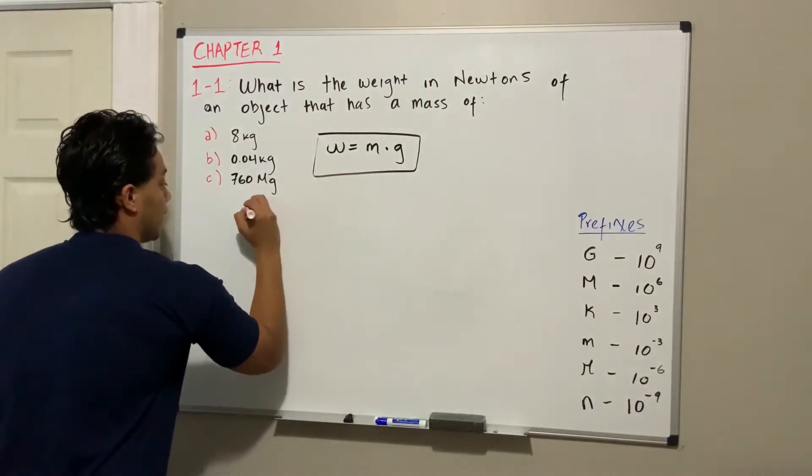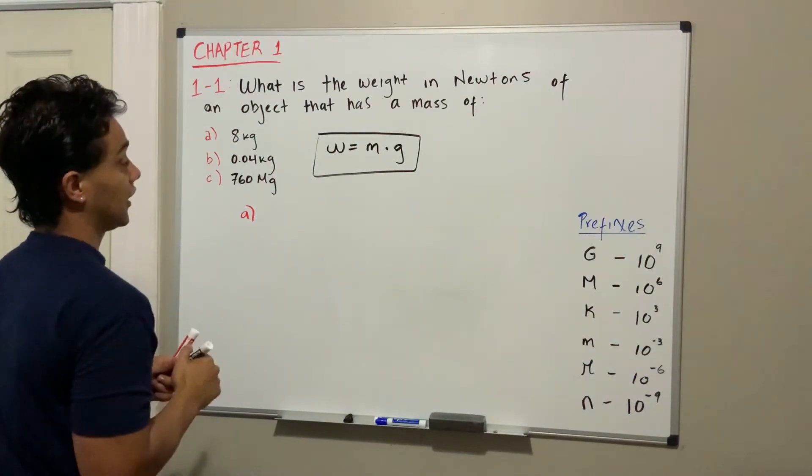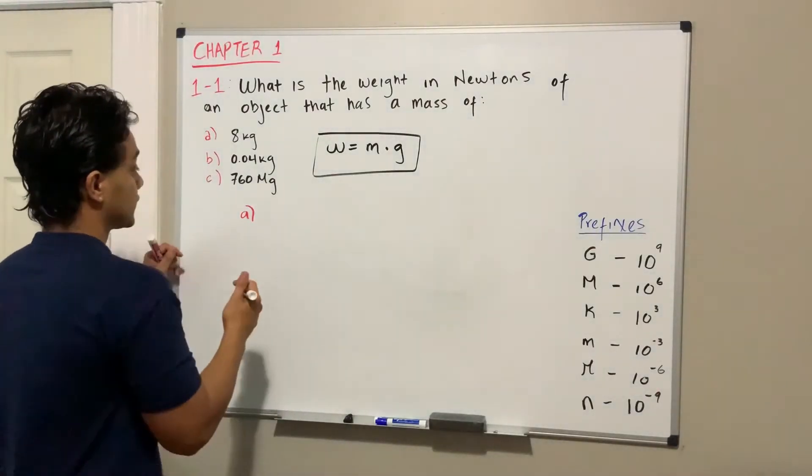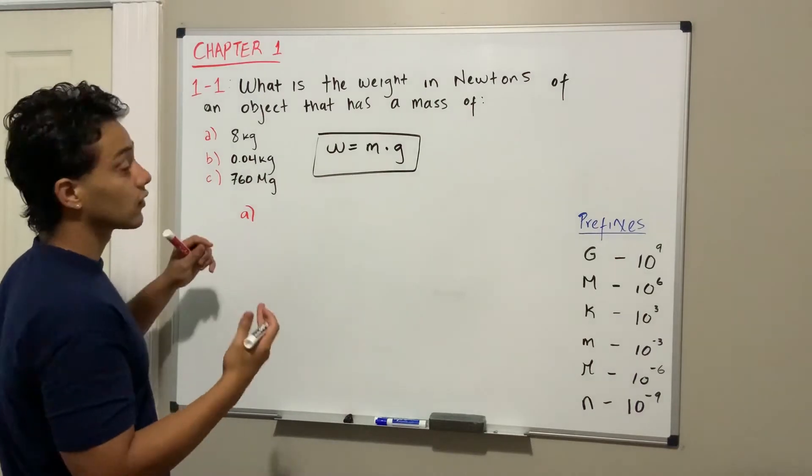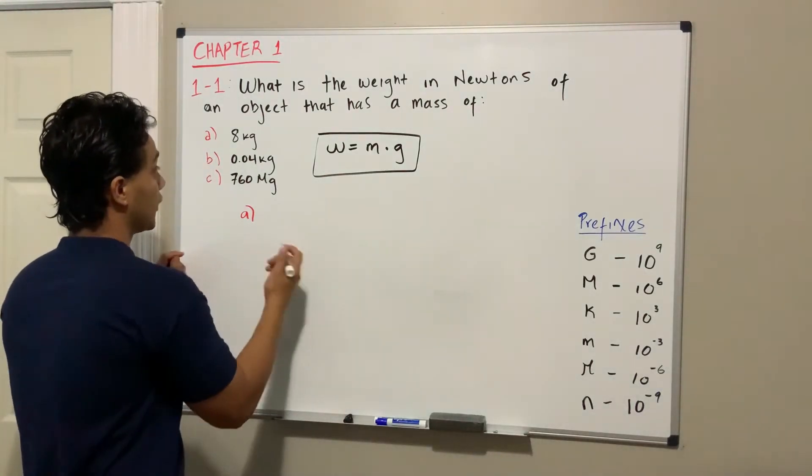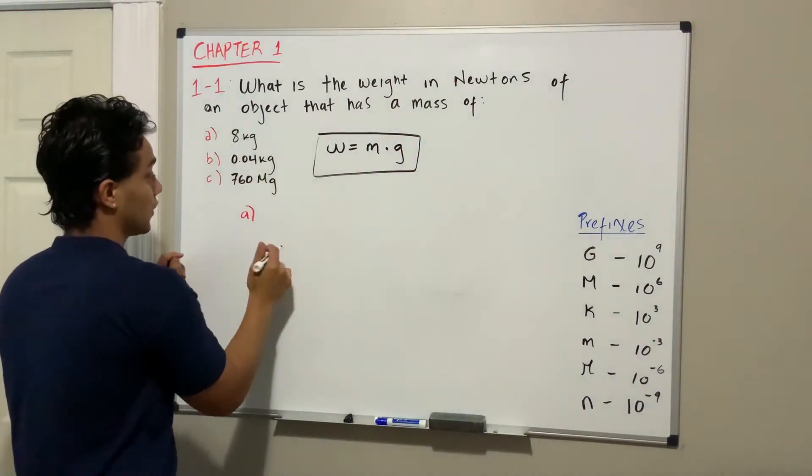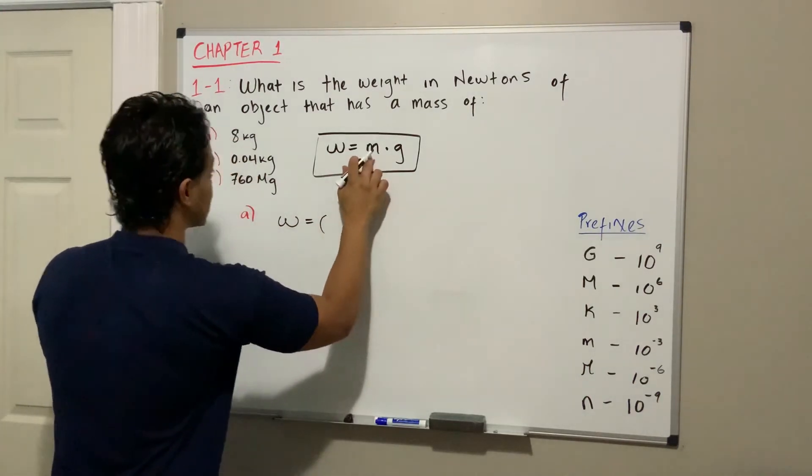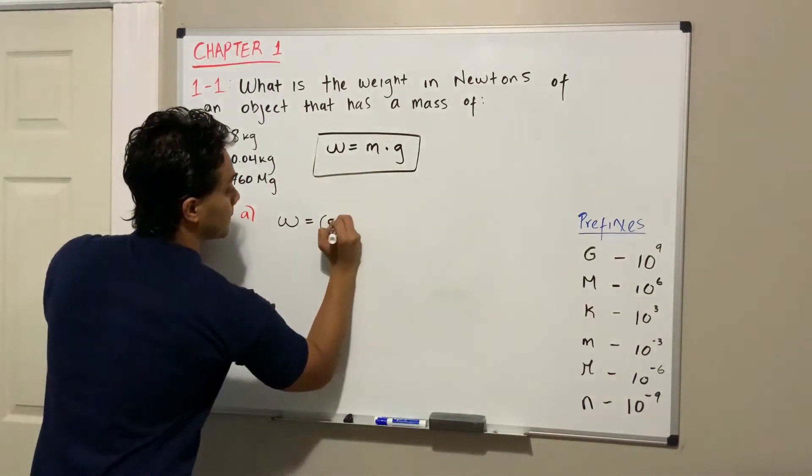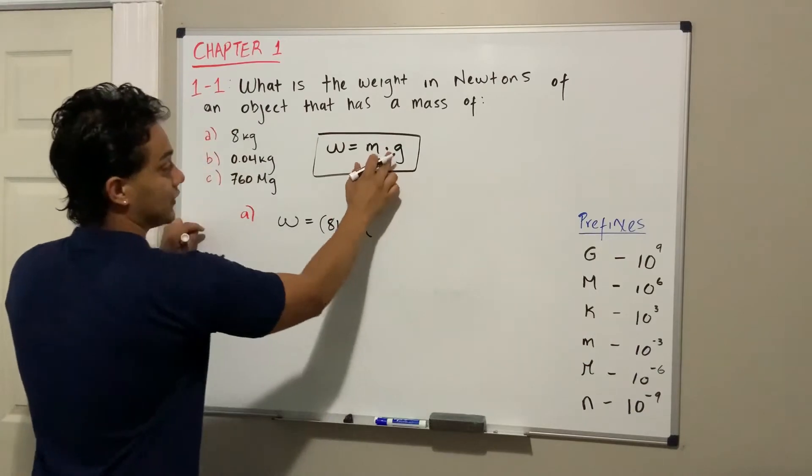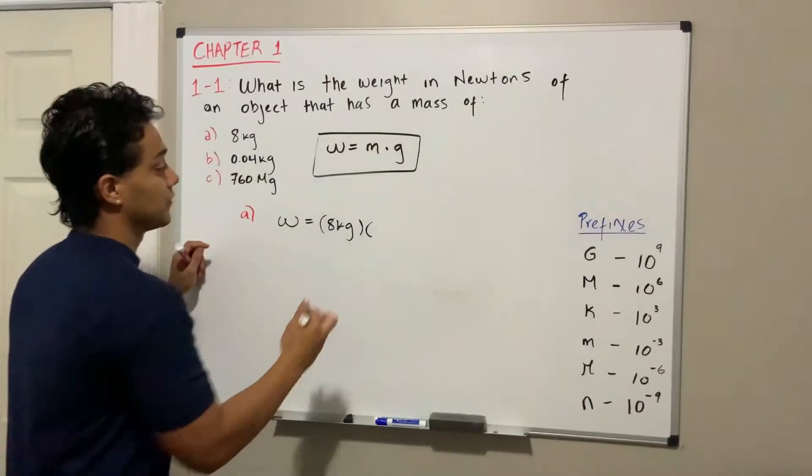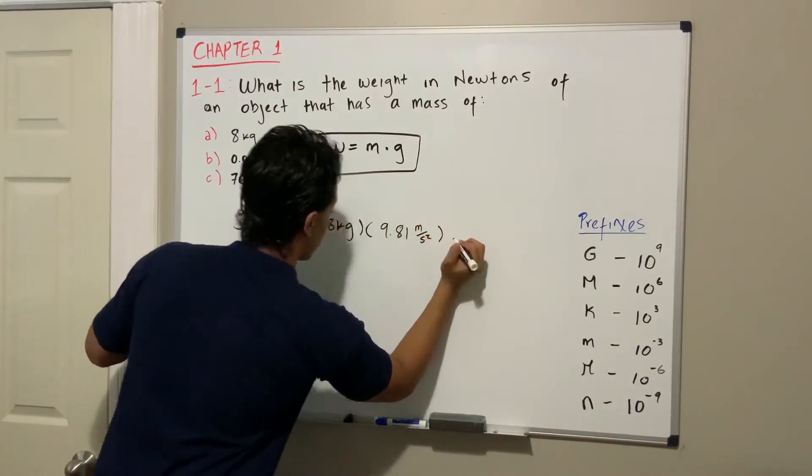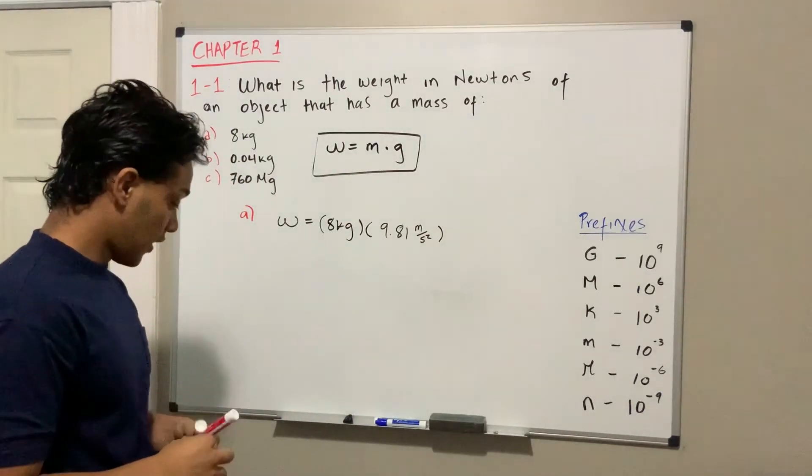They're asking us to find the weight in newtons. The good point is that newtons is actually kilograms times meter per second squared, therefore we don't have to convert the kilograms. The mass we already have is good enough. So the weight is gonna be its mass, 8 kilograms, multiplied by gravity. Gravity in the metric system is 9.81 meters per second squared.